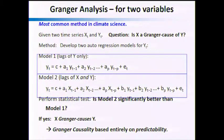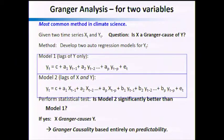Granger analysis for two variables is the most common method in climate science. Given two time series xt and yt, the question is: is x a Granger cause of y? The classic method is to develop two different autoregression models for y. The first has y regressed only on former values of y. The second includes both x and y. I develop these two models, do my regression, perform a statistical test, and ask: is model two significantly better than model one? If it is, I say x Granger-causes y because x is really important for knowing y in addition to the former values of y. Granger causality is completely based on predictability.